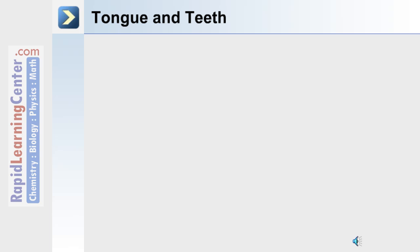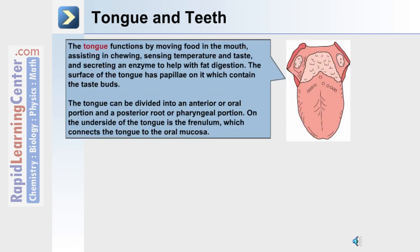Within the oral cavity are the tongue and teeth. The tongue functions in the following way: it moves food in the mouth, which assists in chewing; it also senses temperature and taste; and it secretes an enzyme to help with fat digestion. On the surface of the tongue are papillae, which contain the taste buds. The tongue can be divided into an anterior or oral portion and a posterior root or pharyngeal portion. On the underside of the tongue is the frenulum, which connects the tongue to the oral mucosa.